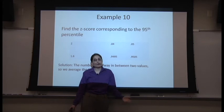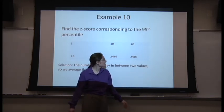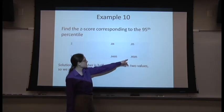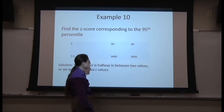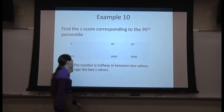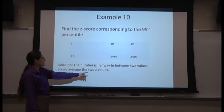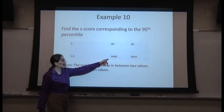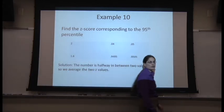Now, we're looking it up. We don't find the exact value. There's no 0.9500. And what's worse, the number we want is halfway between two table values.